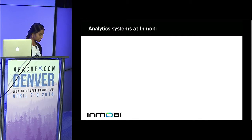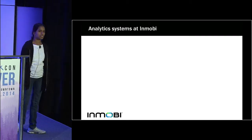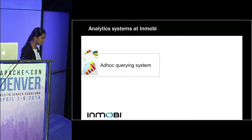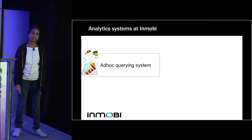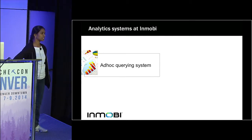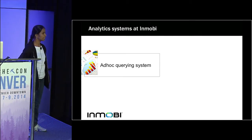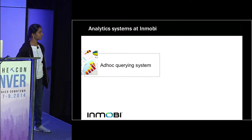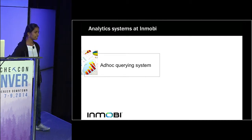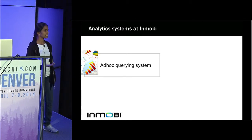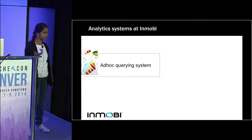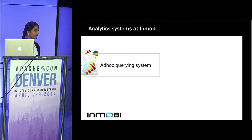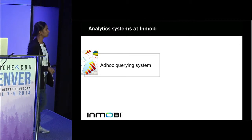All this happens at Inmobi through multiple systems. There is an ad hoc querying system built on top of Hadoop MapReduce that uses data on Hadoop. It has a UI where the user can drag and drop things and submit a query, which launches a MapReduce job, gets the results, converts them to a CSV file, and mails it to the user. This system works on HDFS data and provides a custom API for Java applications.